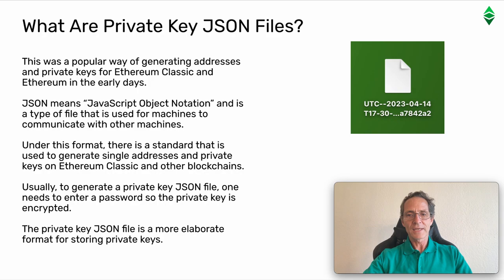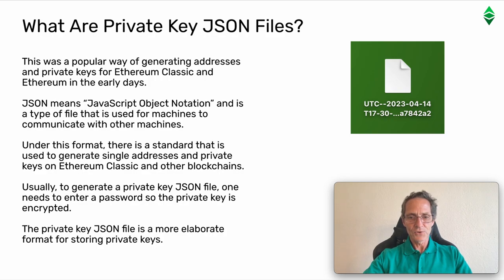What are private key JSON files? This was a popular way of generating addresses and private keys for Ethereum Classic and Ethereum in the early days. JSON means JavaScript Object Notation and is a type of file that is used for machines to communicate with other machines. Under this format there is a standard that is used to generate single addresses and private keys on Ethereum Classic and other blockchains. Usually to generate a private key JSON file one needs to enter a password so the private key is encrypted. The private key JSON file is a more elaborate format for storing private keys.